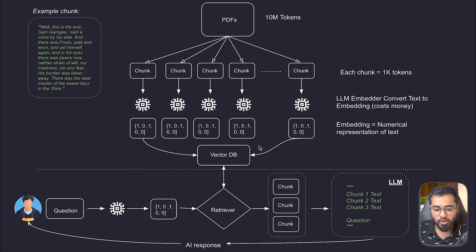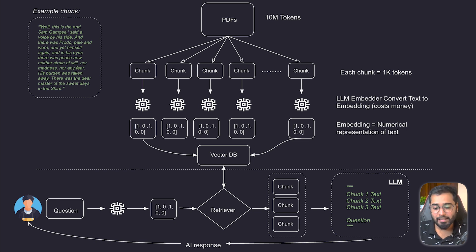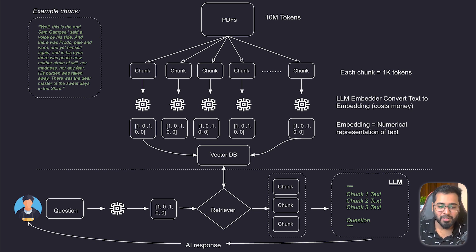And this is where the concept of embeddings and vector databases come into play. It lets us search for chunks semantically — or in other words, based on meaning — and not look for exact words or letters. So in the next section, we're just going to quickly take a detour, look at what embeddings and vector databases are, and then come back to this particular RAG system. I'll see you there.